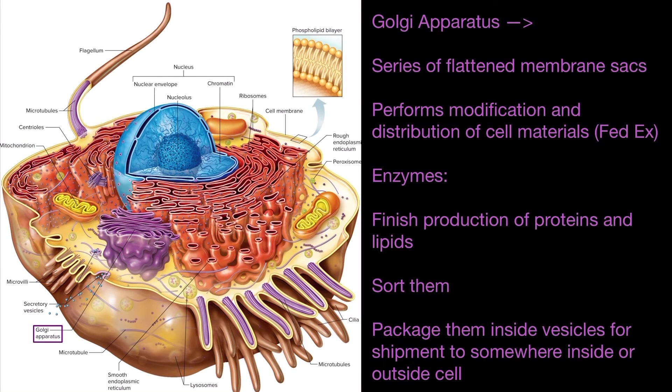The Golgi apparatus, which is this purple structure you can see here, is a series of flattened membrane sacs. Its job is to perform modification and distribution of cell materials, kind of like FedEx. It packages things and then it sends them out for delivery.